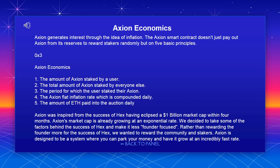The five principles are: 1. The amount of Axion staked by a user. 2. The total amount of Axion staked by everyone else. 3. The period for which the user staked their Axion. 4. The Axion flat inflation rate, which is compounded daily. 5. The amount of ETH paid into the auction daily.